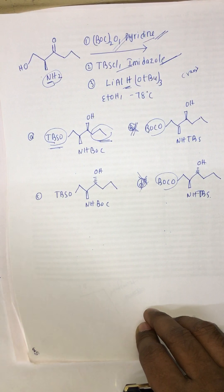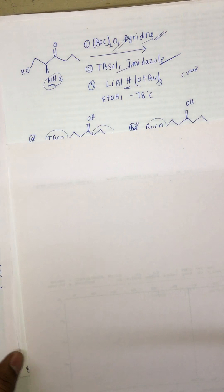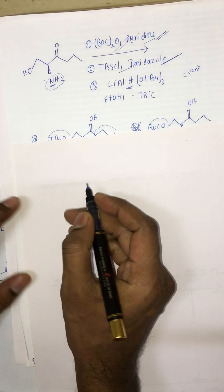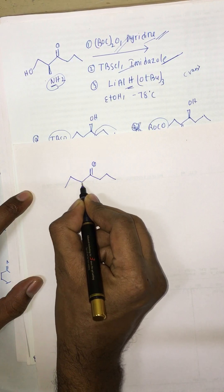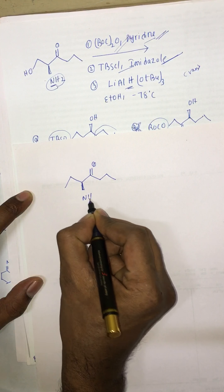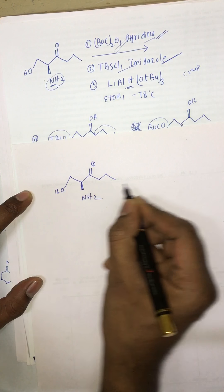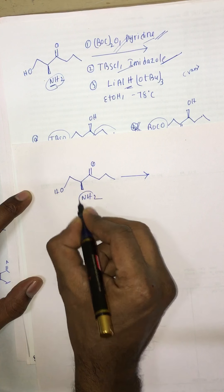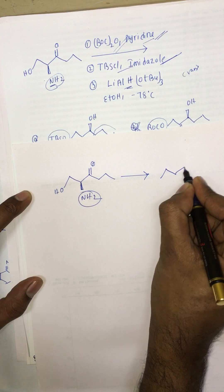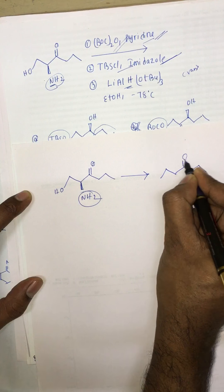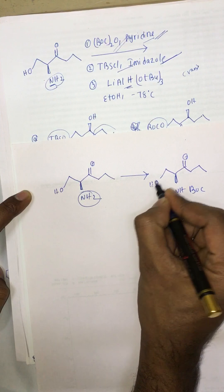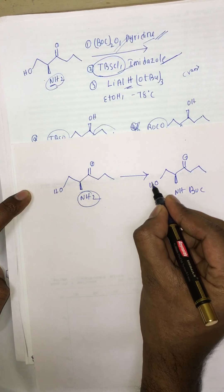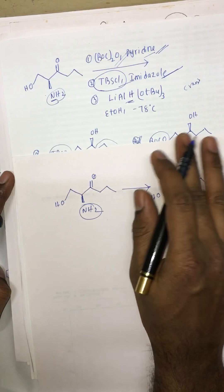Here we have this compound with NH2 here and OH here. We use BOC for protection of this NH and OH, and this one for protecting this OH. After protecting,